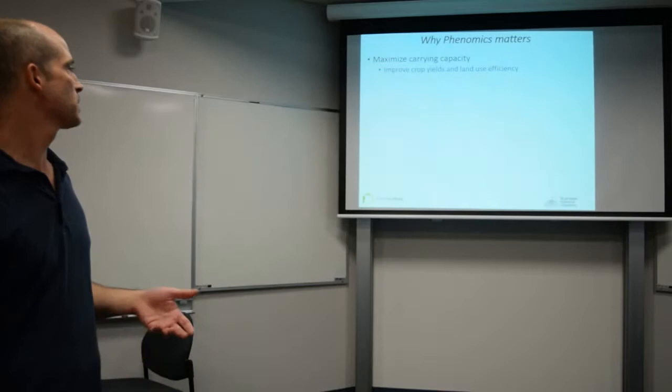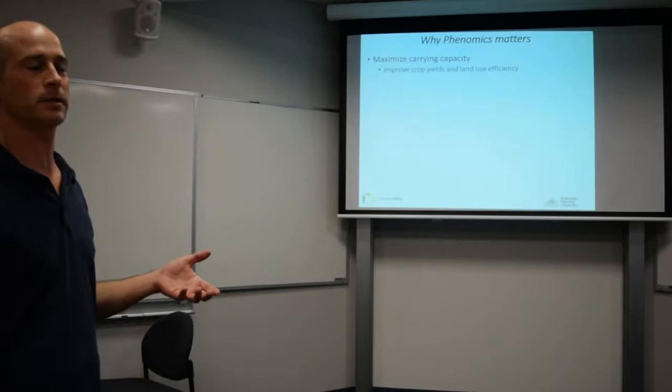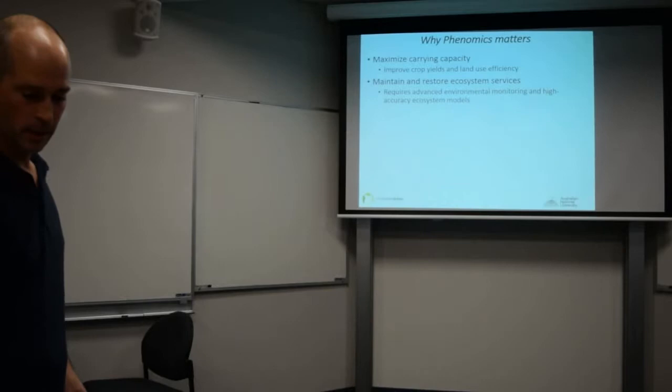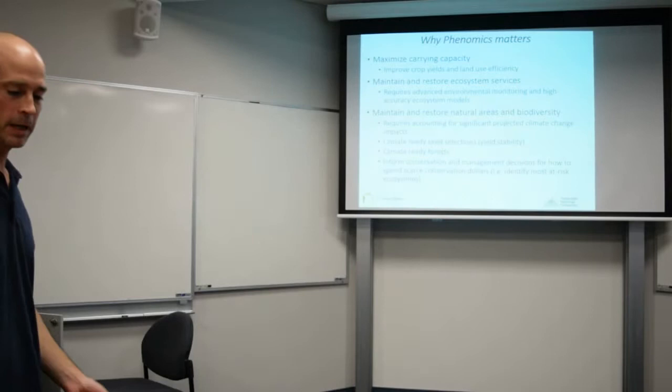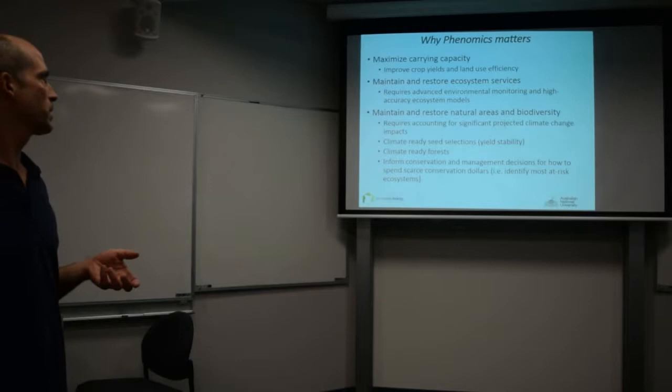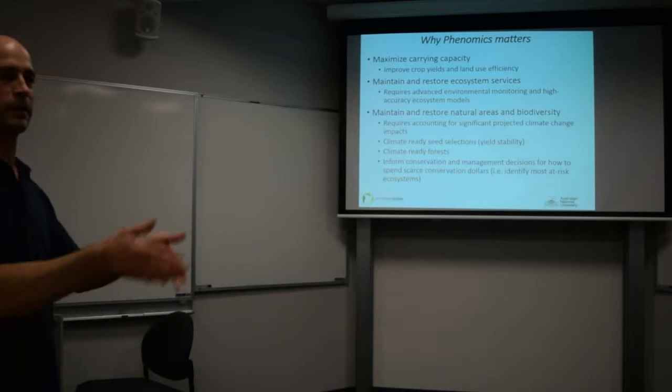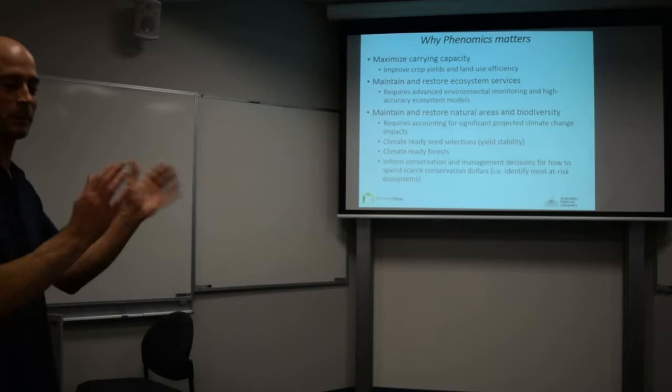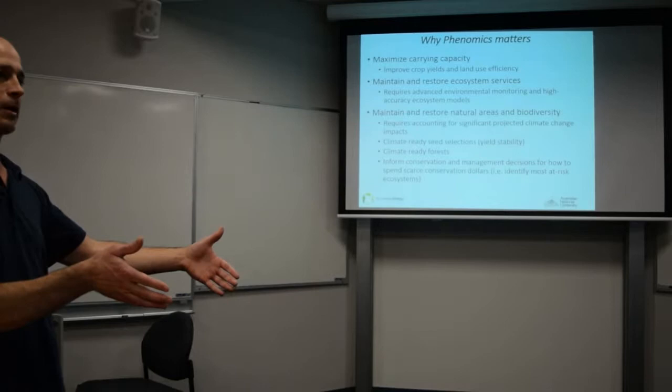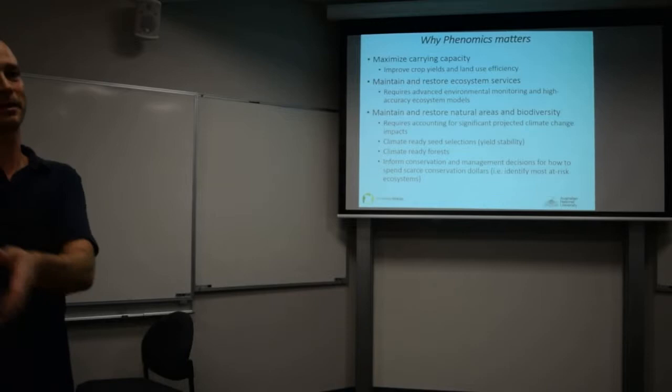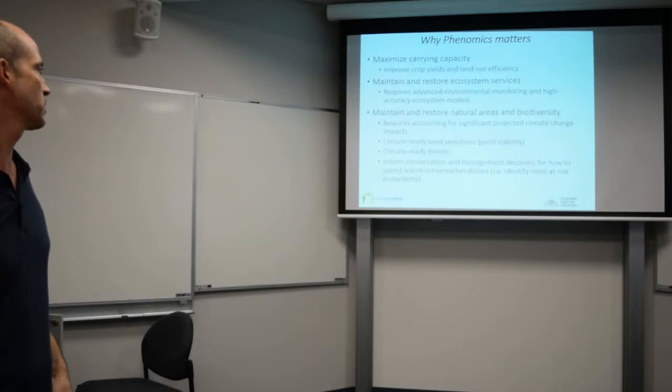Phenomics matters because it helps us maximize carrying capacity. We can improve crop yields and land use efficiency while we understand the genetics of how plants interact with their environments better. We can maintain and restore ecosystem services, but to do this we need really advanced environmental monitoring and high-accuracy ecosystem models. In the U.S. basically crops fail every year for ten years, and then on the eleventh year they get a huge boom. It's much better to plant a seed set based on your predicted environmental model for the coming year, and maybe you only get sixty percent yield every year, but you get that every year.